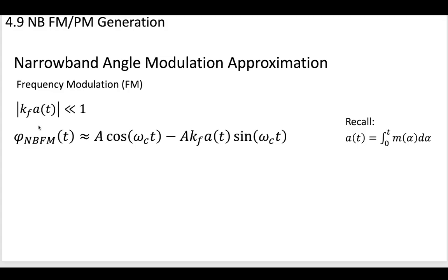When we make this narrowband FM approximation, we see that the narrowband FM signal can be approximated like this: the first part has a cosine term, and the second part is another sinusoidal term being modulated by a version of the message—the integral of the message. This is our narrowband FM approximation.